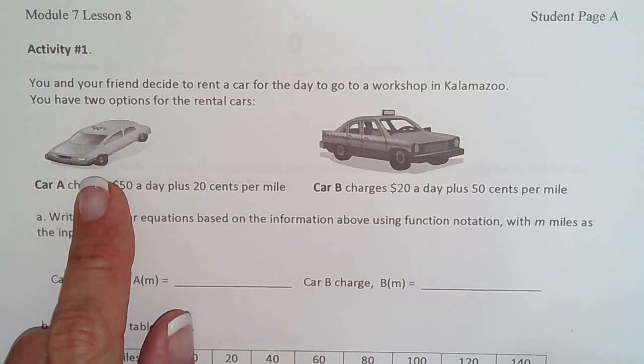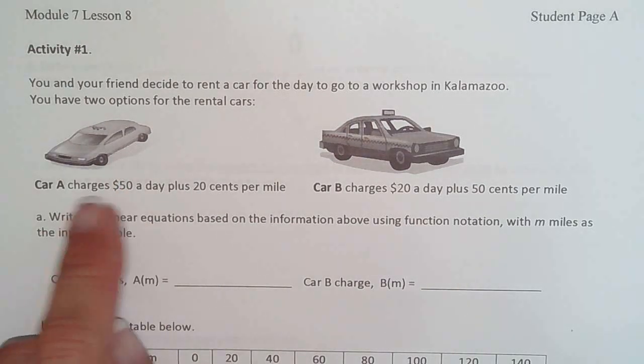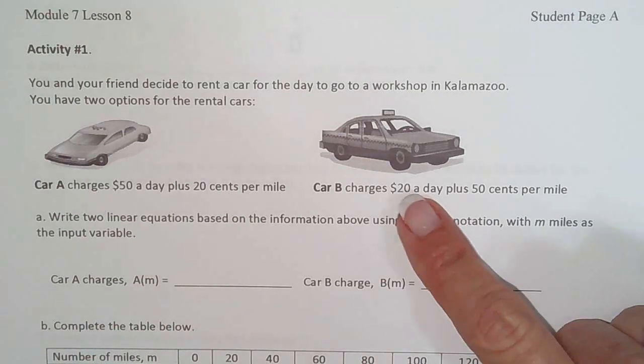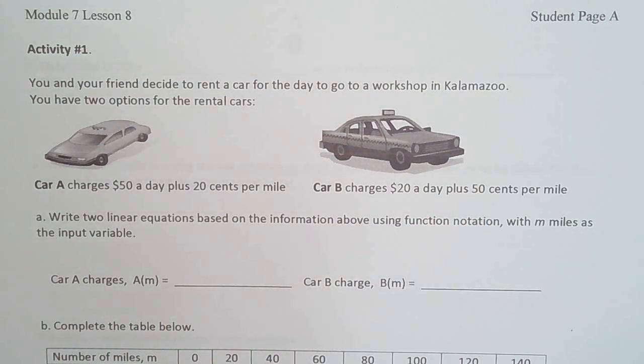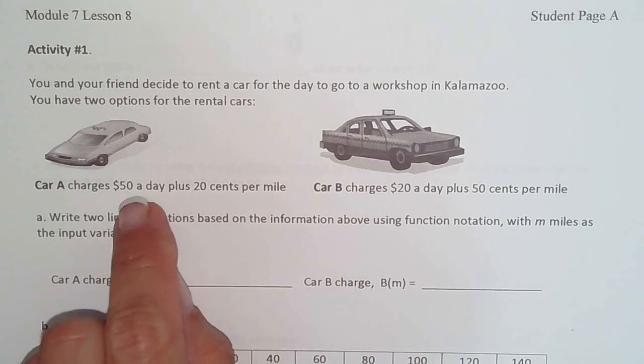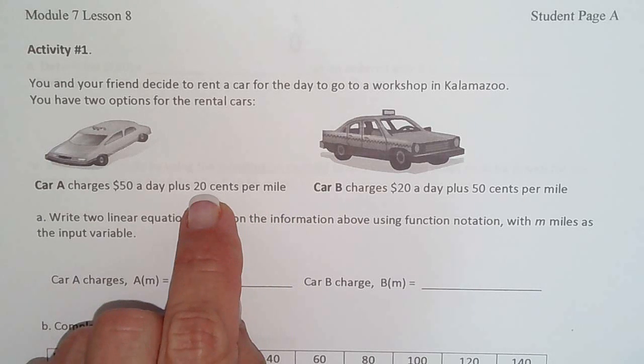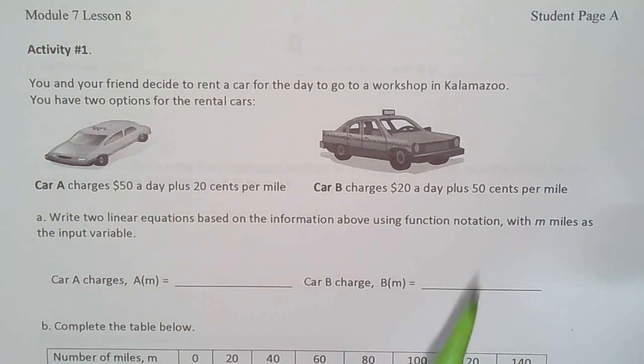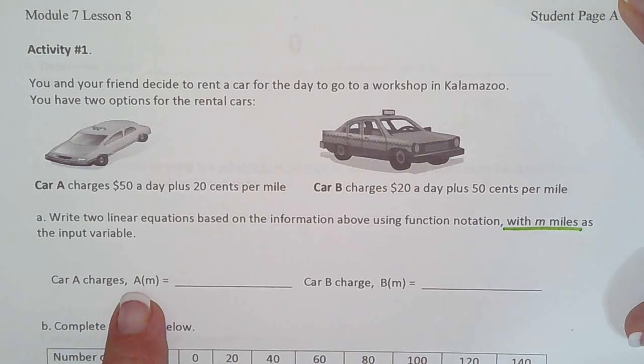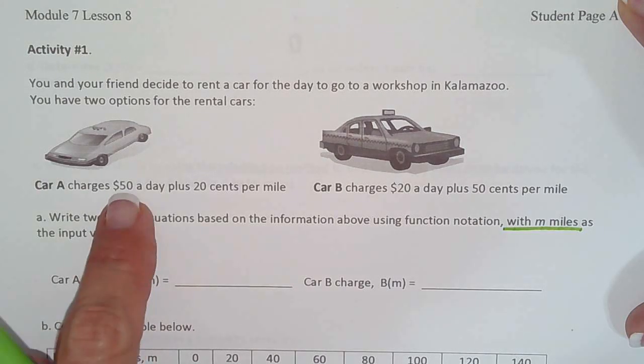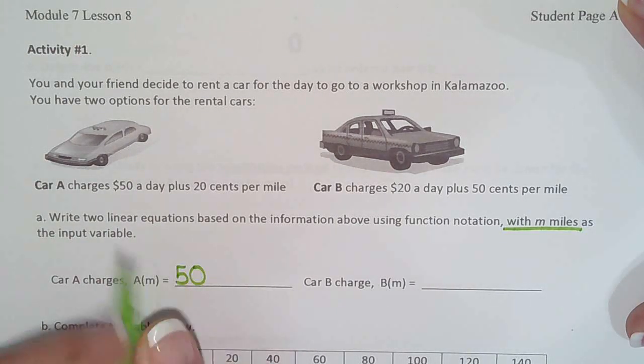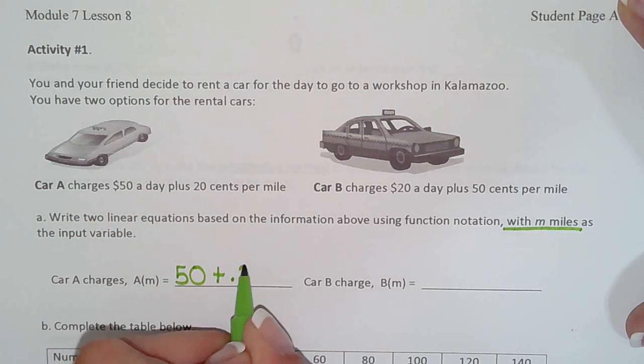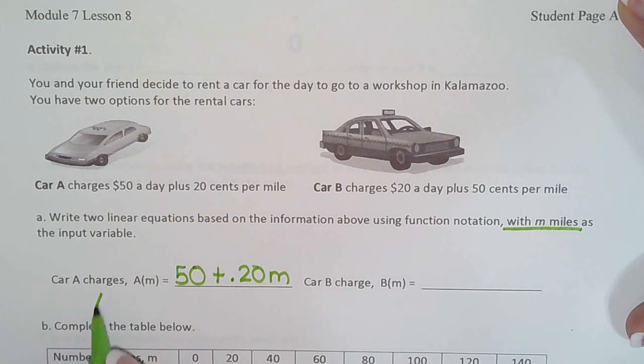So car A charges $50 a day and $0.20 a mile. Car B charges $20 a day plus $0.50 per mile. And I will tell you we had this one on our test last semester and so many people missed it because they didn't write this as a decimal. So $0.20 would be 20 cents per mile. So that's .20 and .50. So they are telling us to use M for miles. And they're calling it car A. So car A after M miles is going to be $50 plus $0.20M, and we're using M.